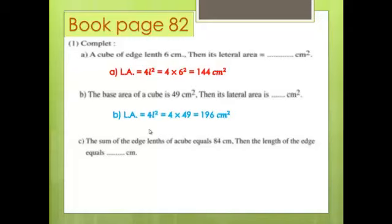Question 1B: The base area of a cube is 49 cm², so L² = 49. Lateral area = 4L² = 4 × 49 = 196 cm².